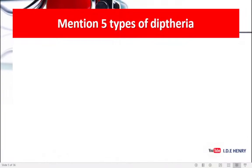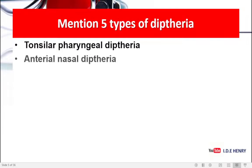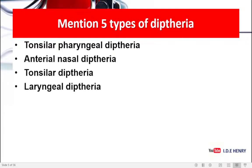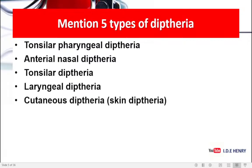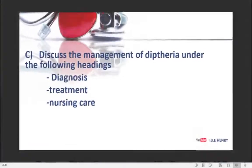Mention five types of diphtheria. We've got tonsillar pharyngeal diphtheria, anterior nasal diphtheria, tonsillar diphtheria, laryngeal diphtheria, and lastly cutaneous diphtheria, also known as skin diphtheria.